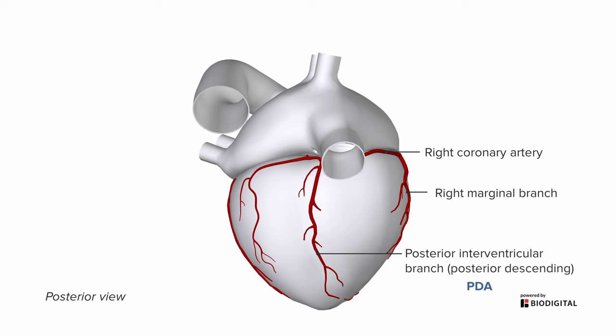Most of the time, about 80% or so, the PDA will come from the right-sided coronary supply, in which case we say a heart is right dominant. But it can also come from some of the left branches — usually a branch of the circumflex — in which case we say the heart is left dominant. Rarely, it can have equal contributions from both, in which case we say a heart is co-dominant.